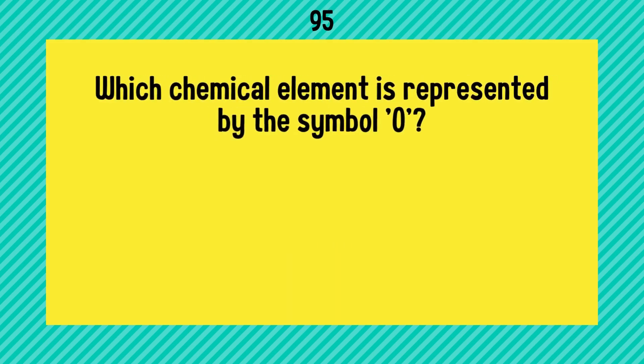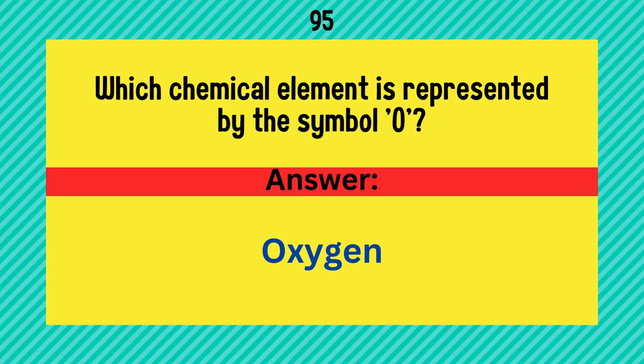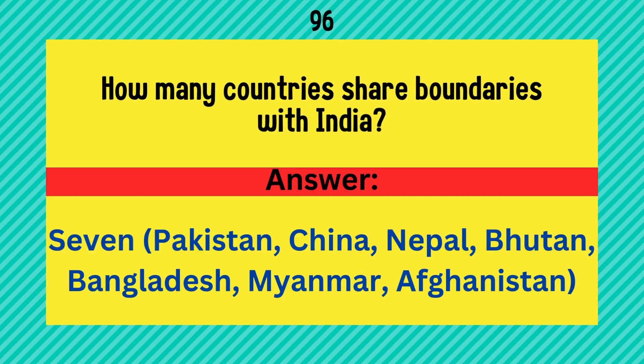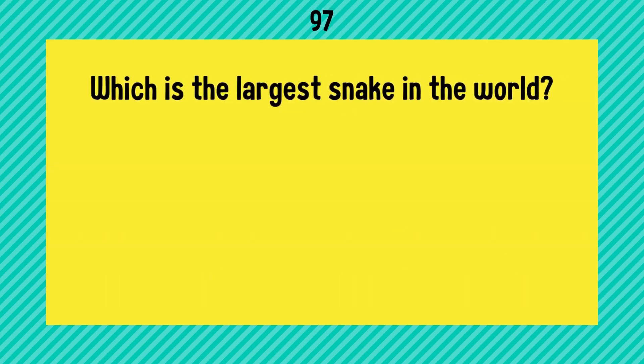Which chemical element is represented by the symbol O? Answer is oxygen. How many countries share boundaries with India? Answer is 7: Pakistan, China, Nepal, Bhutan, Bangladesh, Myanmar, and Afghanistan.